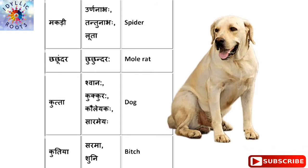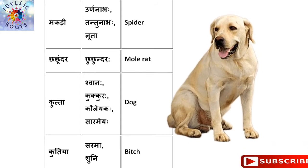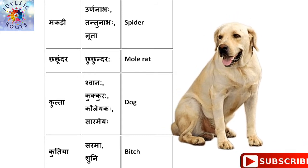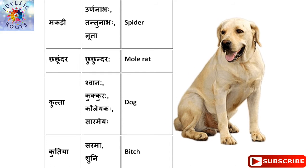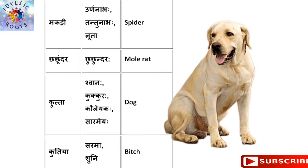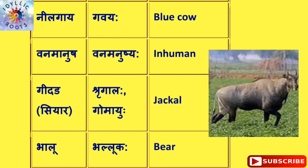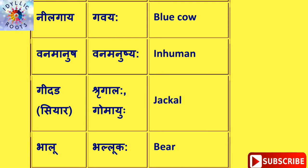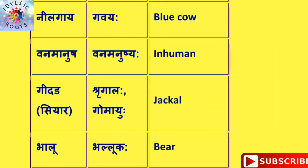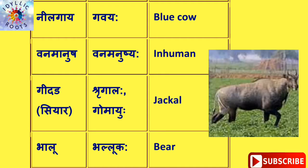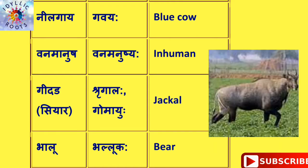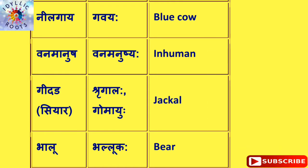चुचुंदर को English में कहते हैं Mole Rat और संस्कृत में कहते हैं चुचुंदरः। कुत्ता को English में कहते हैं Dog और संस्कृत में कहते हैं कुकुरः। कुतिया को English में कहते हैं Bitch और संस्कृत में कहते हैं श्वानी। नील गाय को English में कहते हैं Blue Cow और संस्कृत में कहते हैं गवयः।